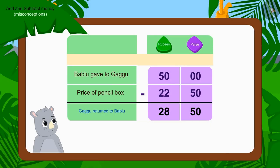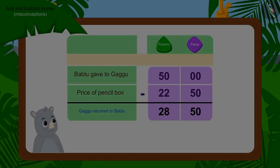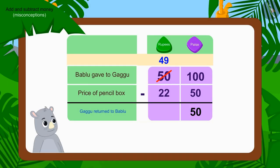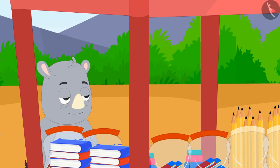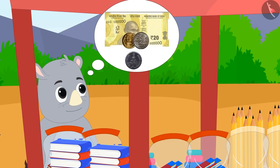Therefore, the amount returned by Gaggu to Bablu was wrong. Children, can you find the right amount by subtracting the numbers written in rupees? Well done, children. You have written the correct answer. Gaggu was to return twenty-seven rupees fifty paise to Bablu.